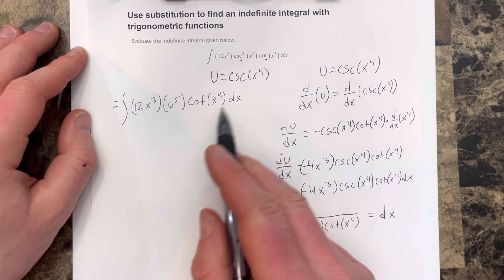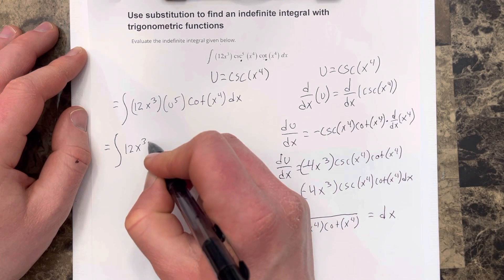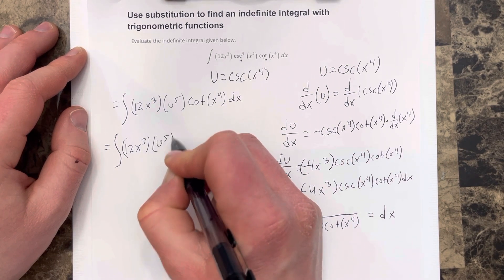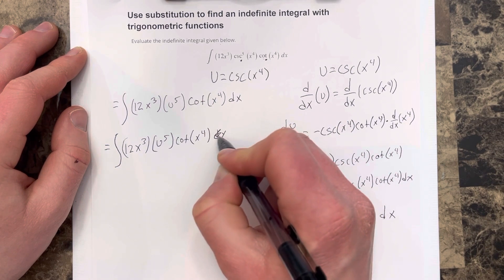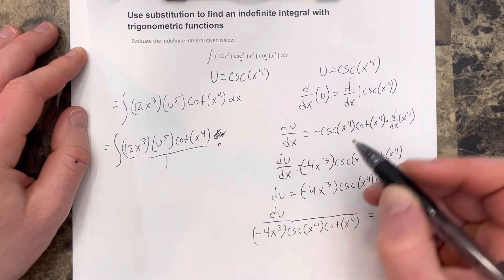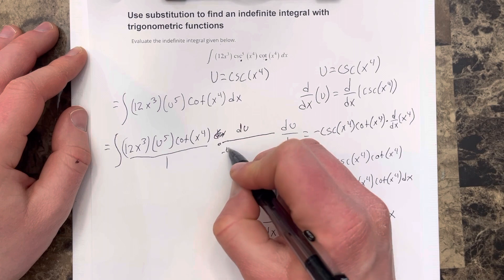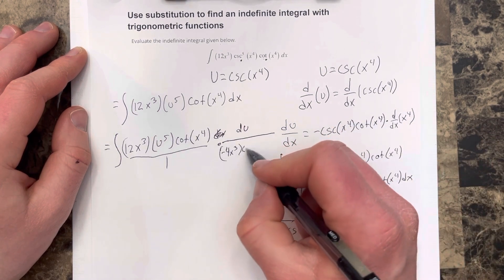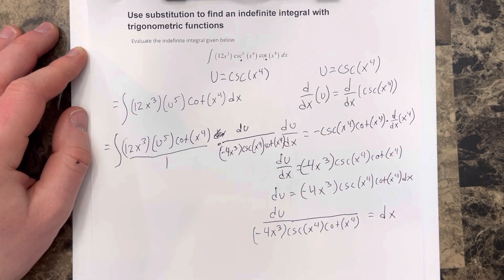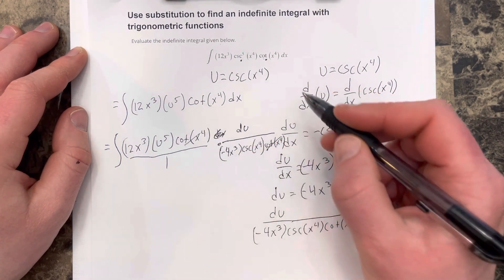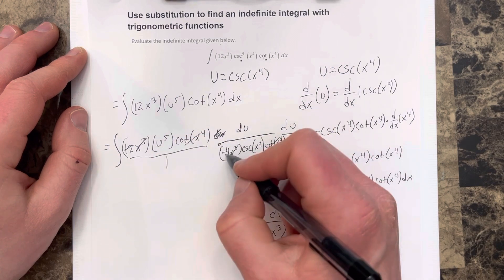Now substituting that in, I get the integral of 12x cubed u to the fifth cotangent x to the fourth, all over negative 4x cubed cosecant x to the fourth cotangent x to the fourth, du. You can see the cotangents cancel, the x cubeds cancel, and 12 divided by negative 4 gives negative 3.